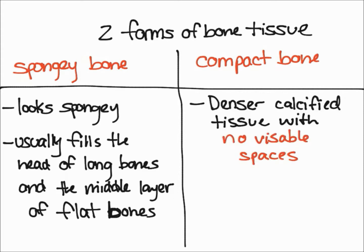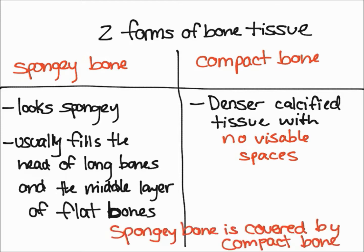That leads us to compact bone. If you ever look at a bone on the outside, you can see that it looks very smooth — it doesn't look like a sponge. It's pretty dense and there are no visible spaces; that's the compact bone. It is essentially a denser calcified tissue with no visible spaces — that's a key difference. For flat bones, compact bone sandwiches the spongy bone, so the spongy bone is like the middle of the sandwich. In long bones such as your femur, compact bone just wraps around the whole bone. Just remember that spongy bone is always covered by compact bone.